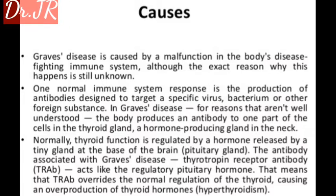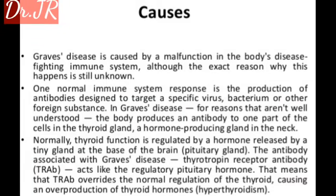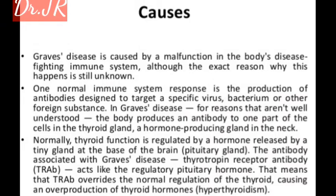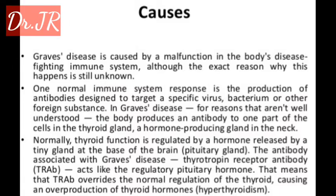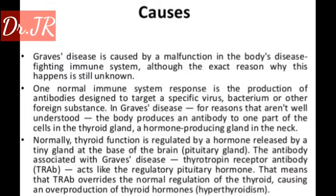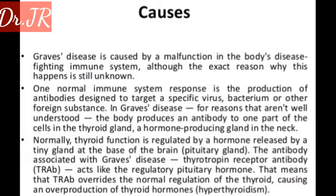Graves' disease is caused by a malfunction in the body's disease-fighting immune system, although the exact reason why this happens is still unknown. One normal immune system response is the production of antibodies designed to target a specific virus, bacterium, or other foreign substance. In Graves' disease, for reasons that aren't well understood, the body produces an antibody to one part of the cells in the thyroid gland, a hormone-producing gland in the neck.